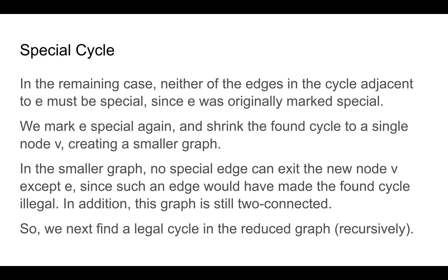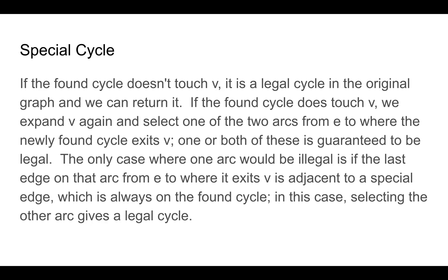So now we have a reduced graph, we recursively find a legal special cycle and we consider what that cycle looks like. If that found cycle doesn't touch v, it is a legal cycle in the original graph, and we're done.